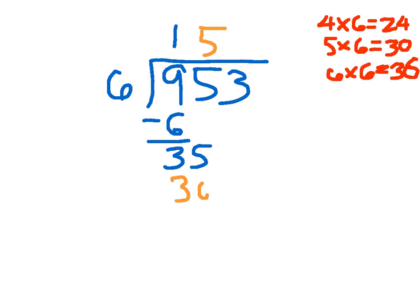Five times six is 30. 35 minus 30 is five. And then we can bring down the three. Again, we always have to see whether or not there's anything else to bring down. We bring down that three right next to the five to get 53 ones. And if we're dividing 53 now by six, we end up getting eight.